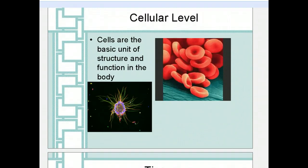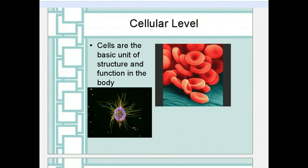The most basic level that all living things have is the cellular level of organization. Cells are simply the basic unit of structure and function in the body. It's the simplest form of life that can exist — a singular cell. In the human body, we have billions of cells.